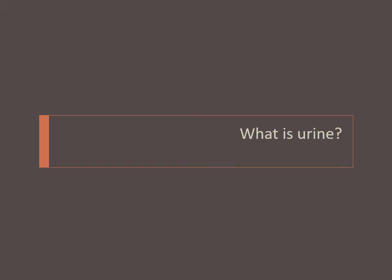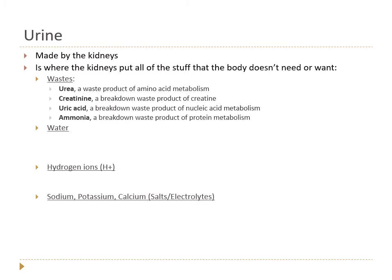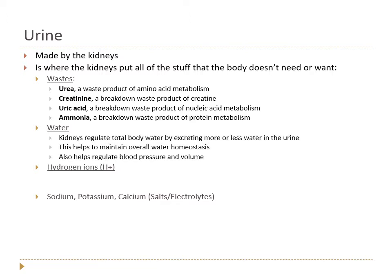At the end of our previous lecture, one of the things we talked about was what is urine — so let's just remind ourselves. Urine is made by the kidneys, and it's where we put all of the stuff that we don't need or want. Wastes are going to be in the urine — we're going to eliminate wastes such as urea, creatinine, uric acid, and ammonia. Urine also contains a lot of water because it allows us to get rid of those solutes by dissolving them in water, and it also allows us to regulate our total body water.